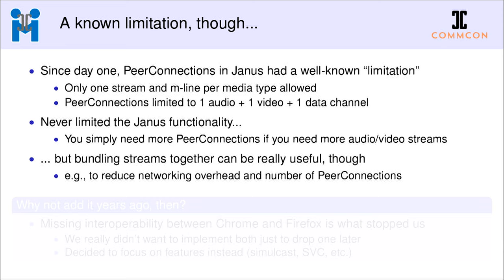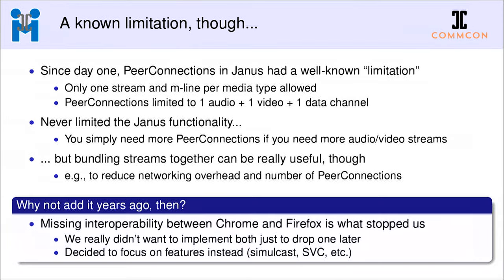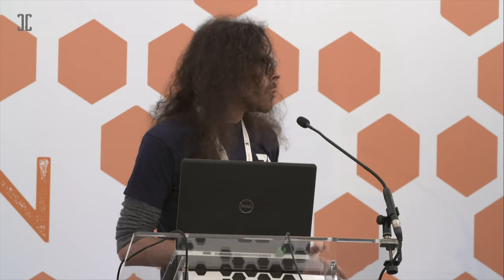It might make sense to put them together. You may wonder why we didn't do this earlier — the problem is that Chrome and Firefox implemented this multi-stream functionality in very different ways, and we really didn't want to implement both knowing that one would eventually get thrown out. We decided to focus on individual features instead, because in terms of functionality Janus could still do whatever a component that supports multi-stream does.